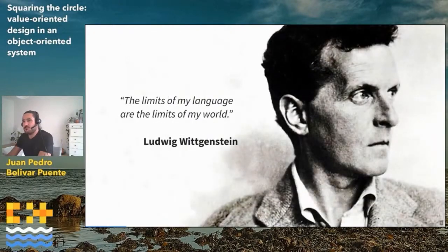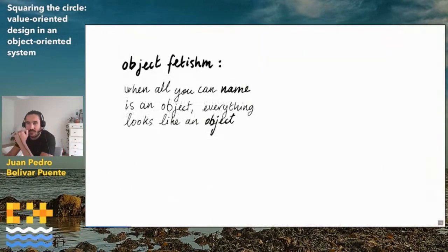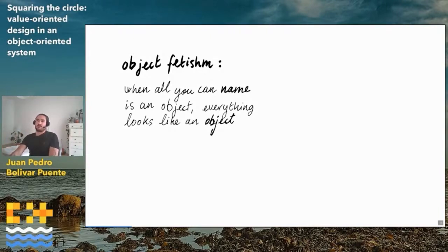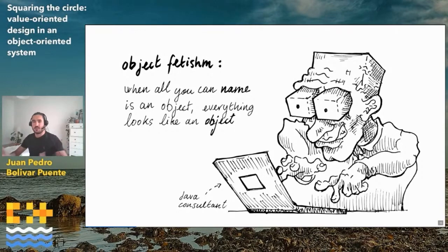The philosopher Wittgenstein said that the limits of my language are the limits of my world. I think this leads to a consequence in C++ programming which is a kind of disease that many of us have: object fetishism. When all you can name is an object, everything looks like an object. We start thinking in terms of squares, in terms of objects, when modeling and understanding the world, instead of thinking in the more abstract sense of values.